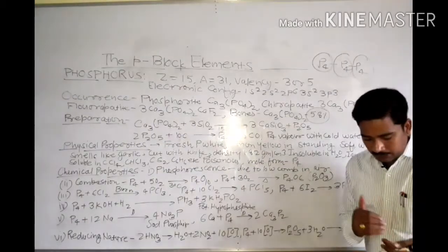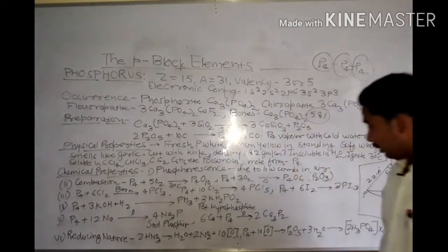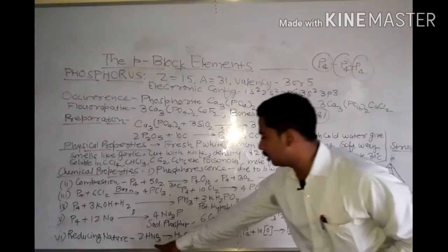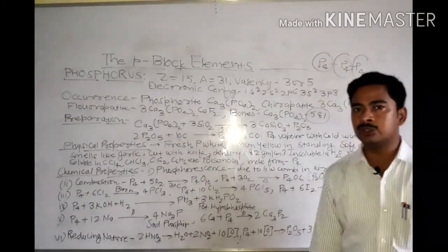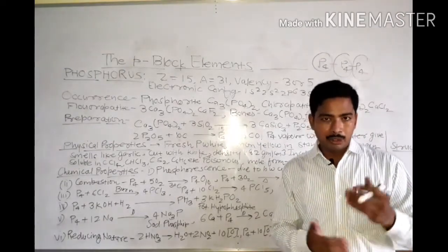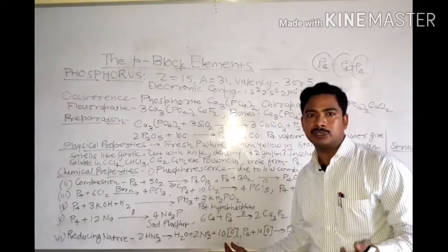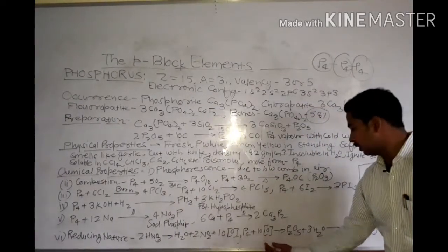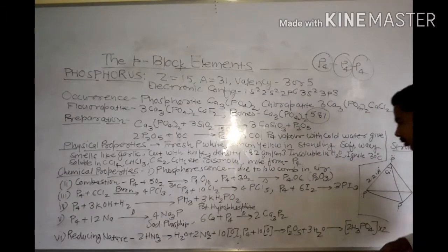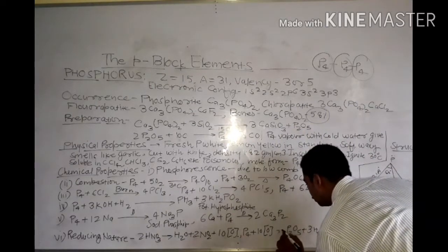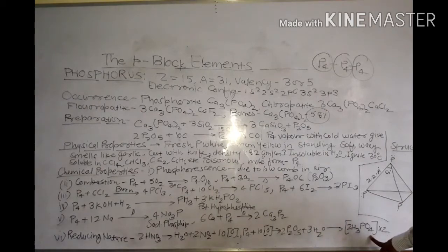The last chemical property is reducing nature — phosphorus can reduce other compounds by withdrawing oxygen. When phosphorus reacts with nitric acid, it promotes nitrogen dioxide and nascent oxygen production. The nascent oxygen atoms then oxidize phosphorus to give P2O5, which on reaction with water gives H3PO4 — phosphoric acid.